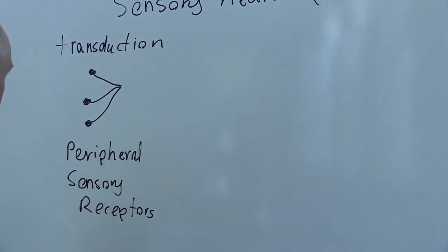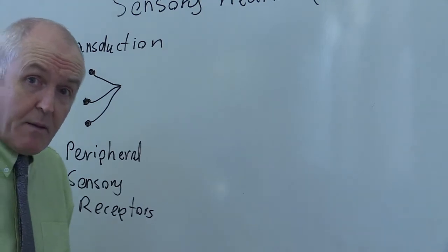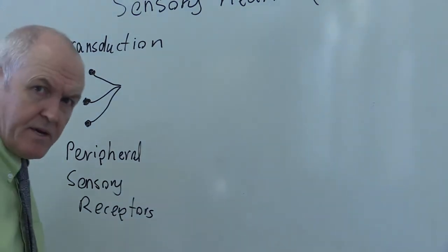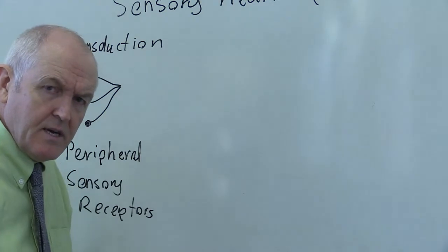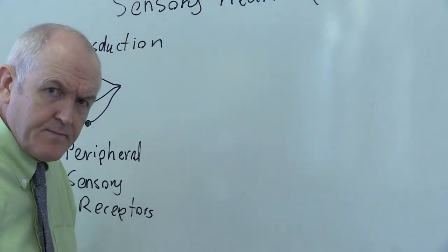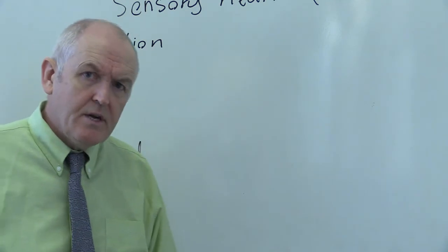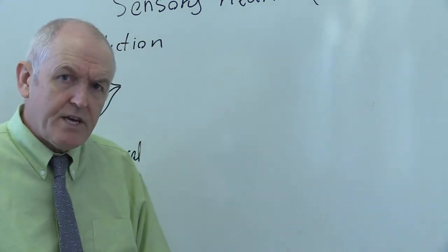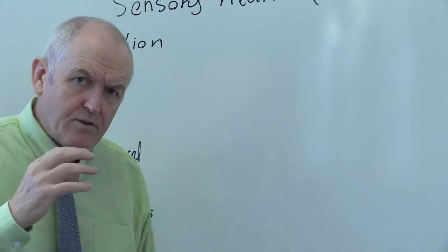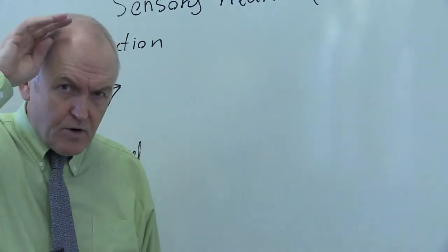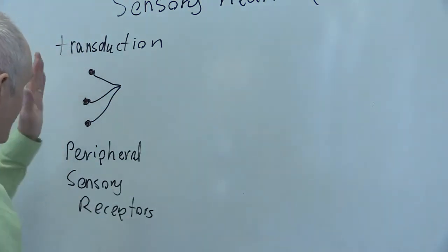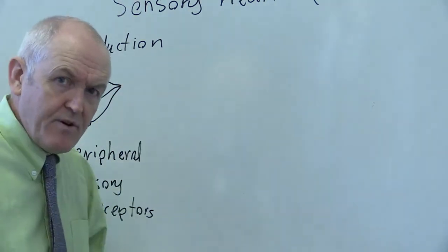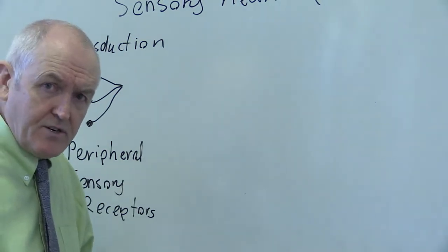It's the same with a pain receptor — a painful stimulus damaging the body tissues causes transduction in the specialized pain receptors called nociceptors. In the motor neuron, the new nerve impulse was generated in the cell body in the motor cortex of the brain, whereas here the new nerve impulse is generated in the periphery as a result of transduction.